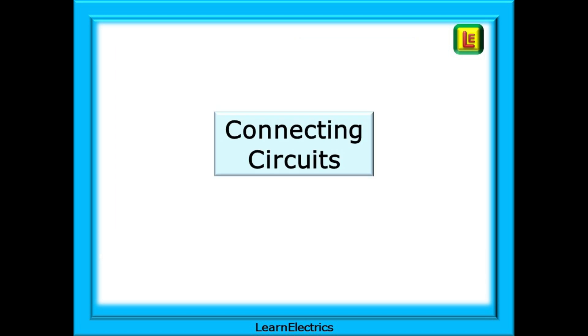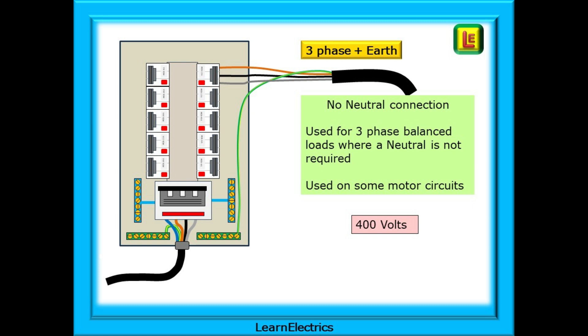Let's now connect some circuits to the board. Following a logical method, it's really very easy. And looking at an already wired board is just as easy once you understand the basics of the board wiring. We can begin with a three-phase plus earth circuit, a four-wire circuit. There is no neutral connection to this circuit and it is used for three-phase balanced loads where a neutral is not required.